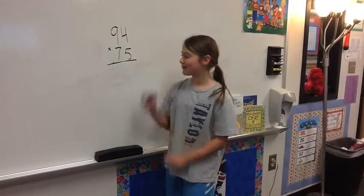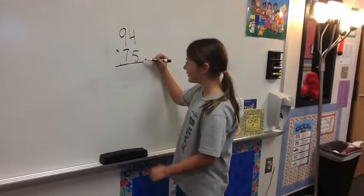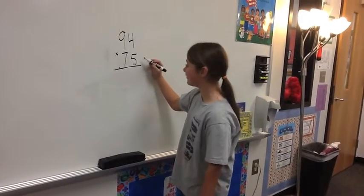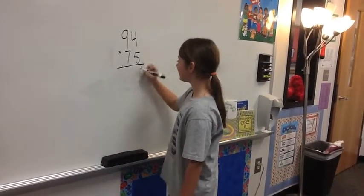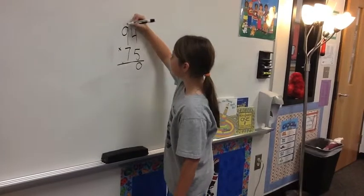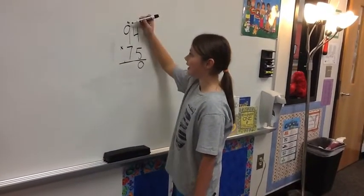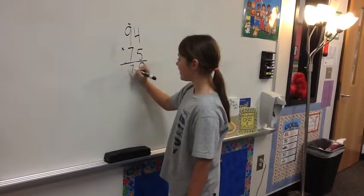I'm going to be showing you how to do the traditional method in multiplication. When you write your equation, you have to line your numbers up, because it can get confusing. So 5 times 4 is 20. Put the zero, and you carry the 2. 5 times 9 is 45, but you have to add your 2. So that would be 47.